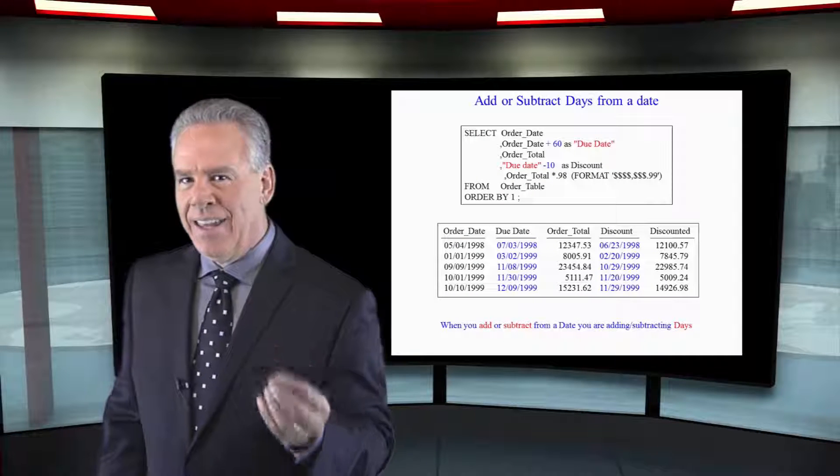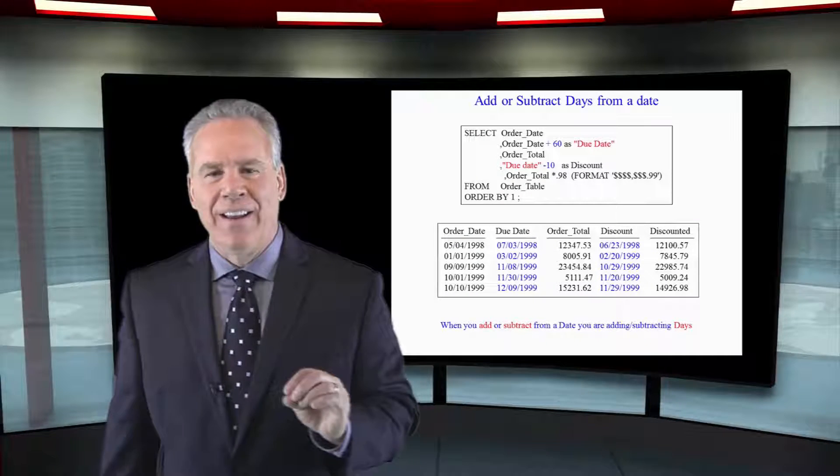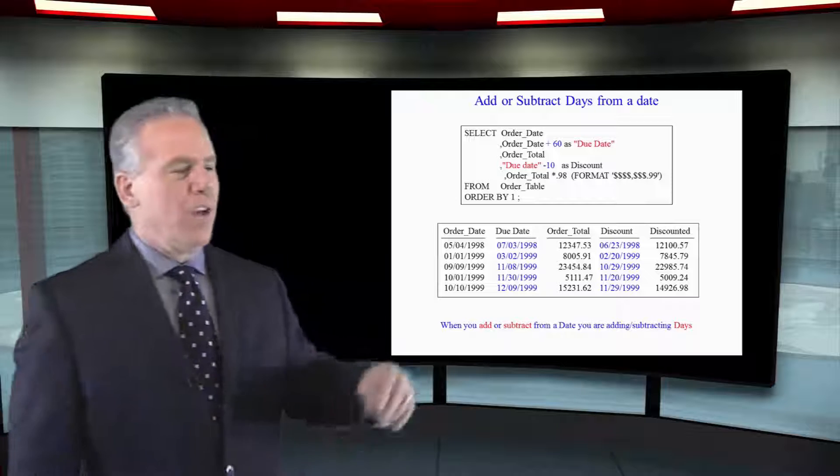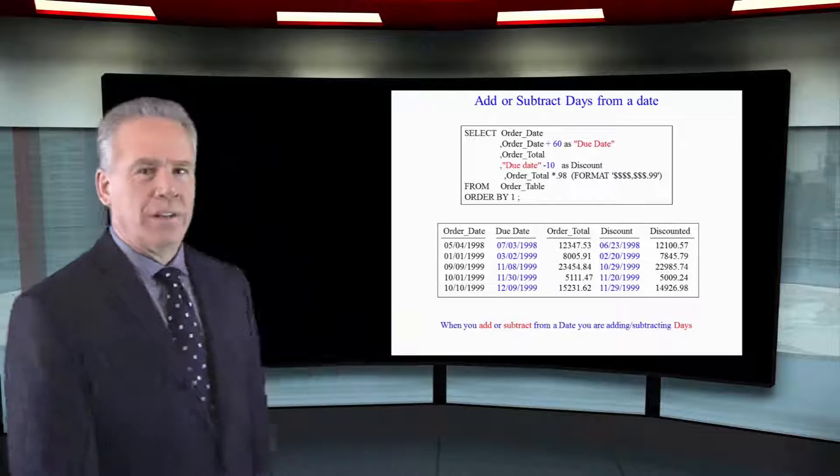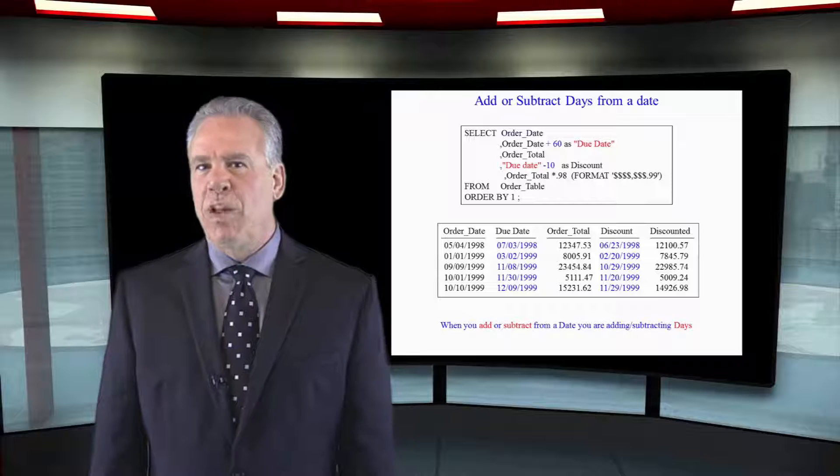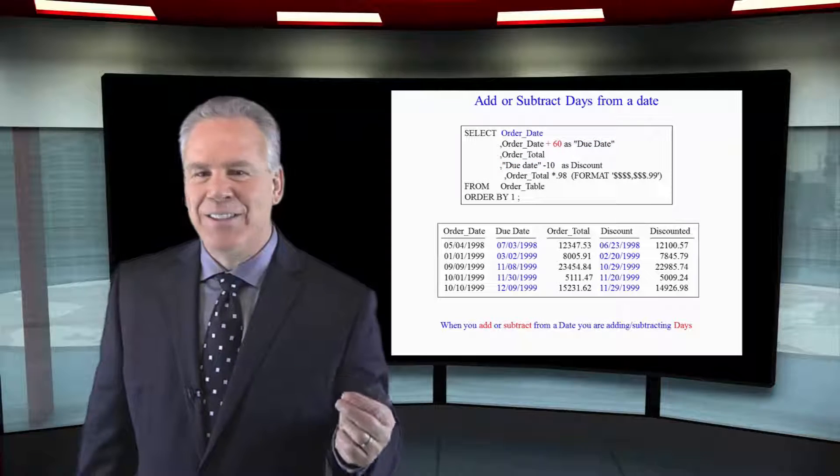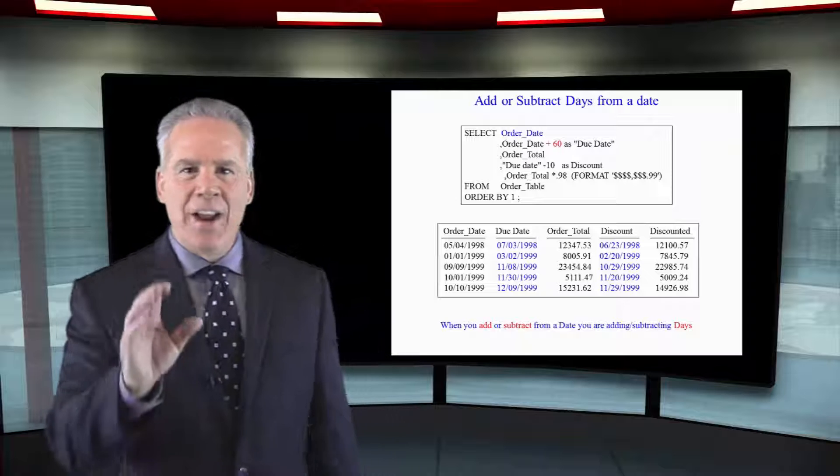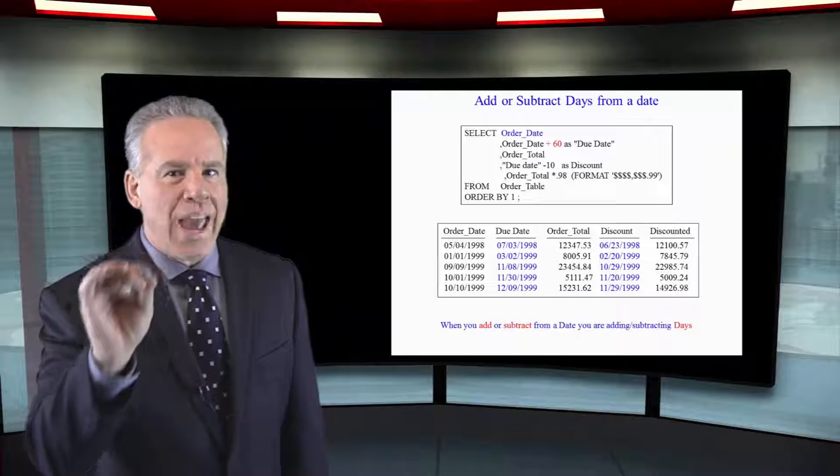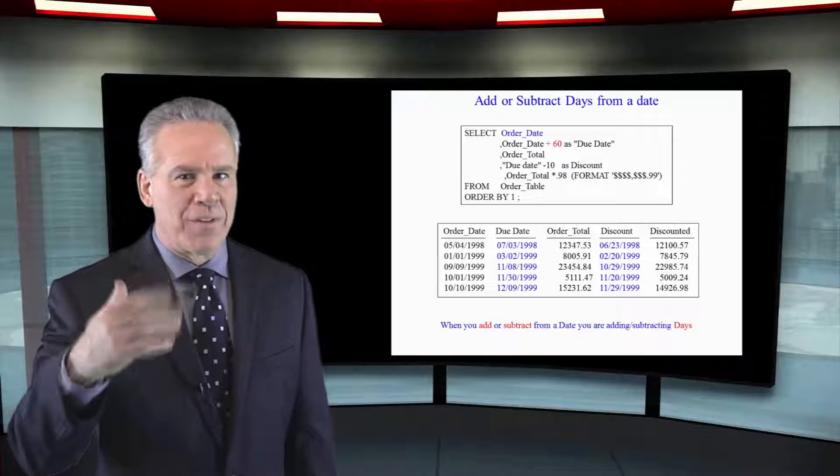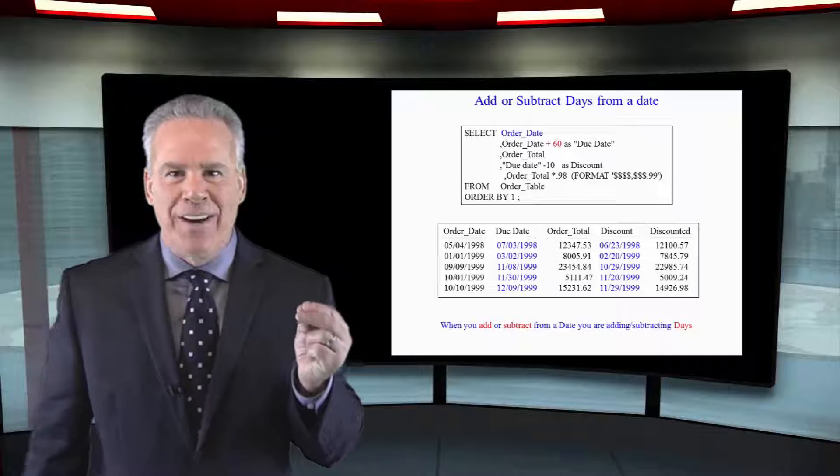Here's a live query in action. This is going to be very interesting. We're going to select the order date and then the order date plus 60, which is going to give them 60 days to pay. Anytime you have a date and you add or subtract a number from that, it's a number of days.